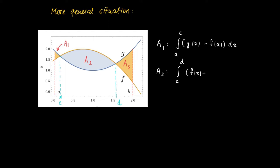So we get A2 equals the integral from c to d of f(x) minus g(x), since now f is the larger one of the two.